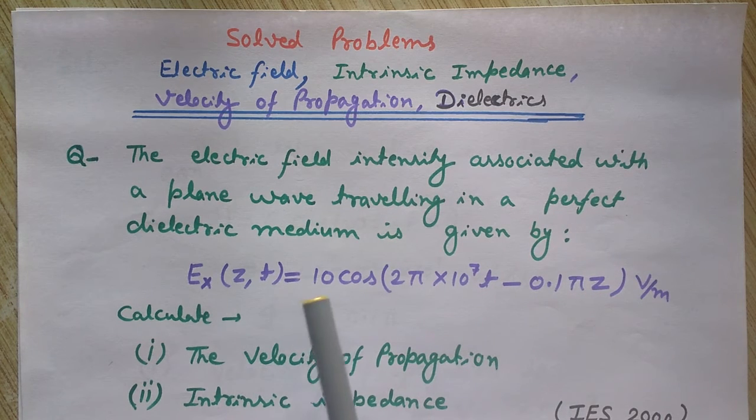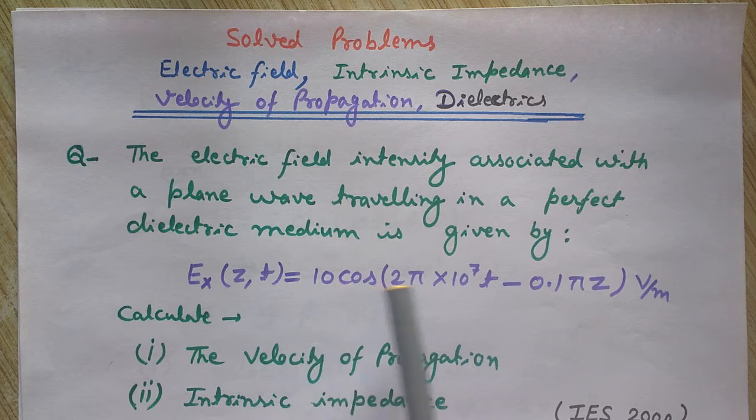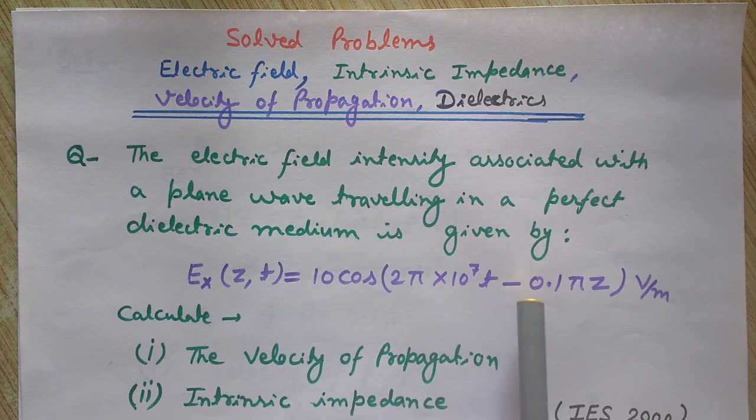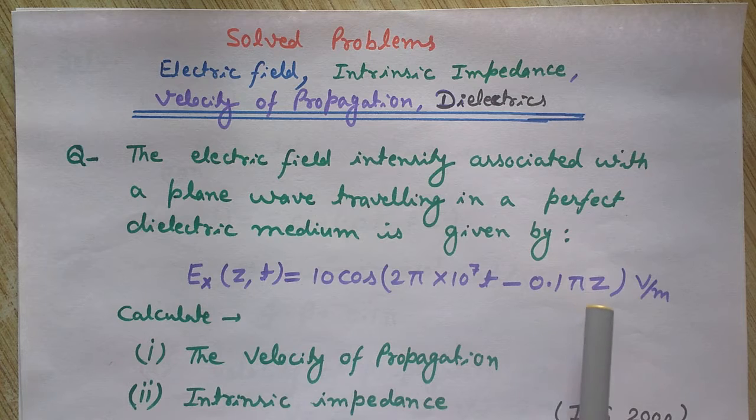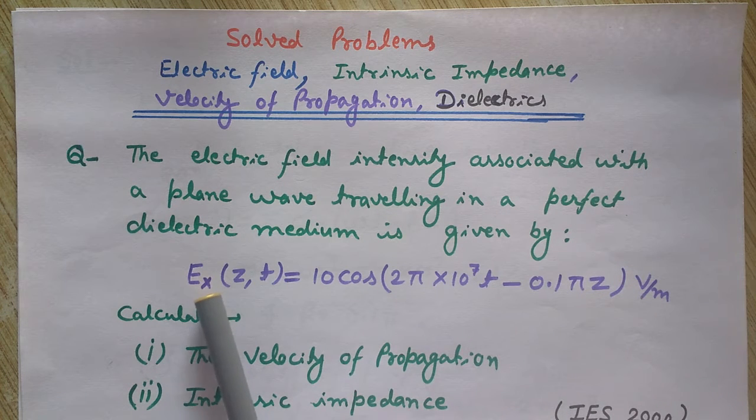It is given by the equation Ex(z,t) = 10cos(2π × 10^7 t - 0.1πz) V/m. Since it is an electric field, the units are volts per meter.